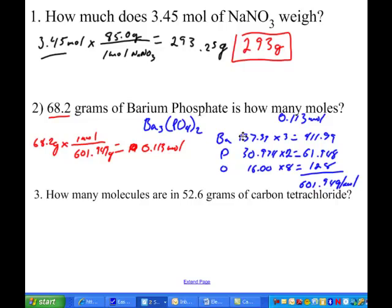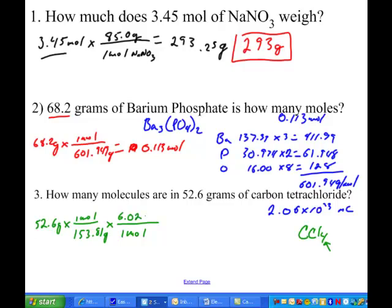Pause the video, try this last one, see if it works out. How'd you do? If you got a value of 2.06 times 10 to the 23rd molecules, then you're in great shape. The first thing I've got to do, by the way, the formula for carbon tetrachloride is CCl4. Tetra means 4, so 4 chlorines. I've got 52.6 grams, and then one mole. I've added it all up, and I've got a molar mass for carbon tetrachloride to be 153.81. Make sure you get that. And then now that I have it in moles, I know that one mole of anything is Avogadro's number, 6.022 times 10 to the 23rd molecules. That's how that works.